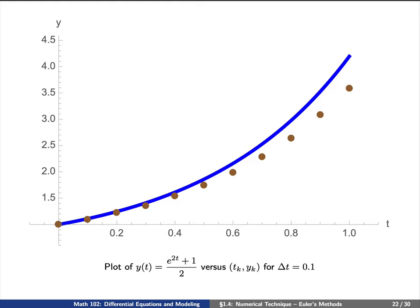Let's now plot all of these points and plot the actual solution to see what does all of this mean graphically. On this screen here, you see a plot of the actual solution versus the plot of the approximate solution. In blue, we've plotted y of t, which is e to the 2t plus 1 over 2. And in gold, you see the points tk comma y sub k.